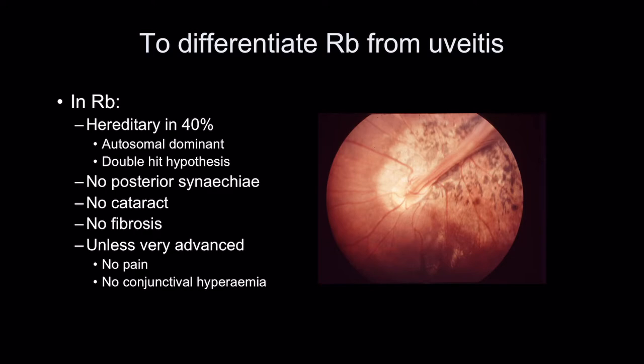In retinoblastoma, generally you see no posterior synechiae, no cataract, no fibrosis — unlike Toxocara, which has a fibrotic retinal fold. And unless the tumour is very advanced, you won't see any pain or conjunctival hyperemia. Those are all important clues.